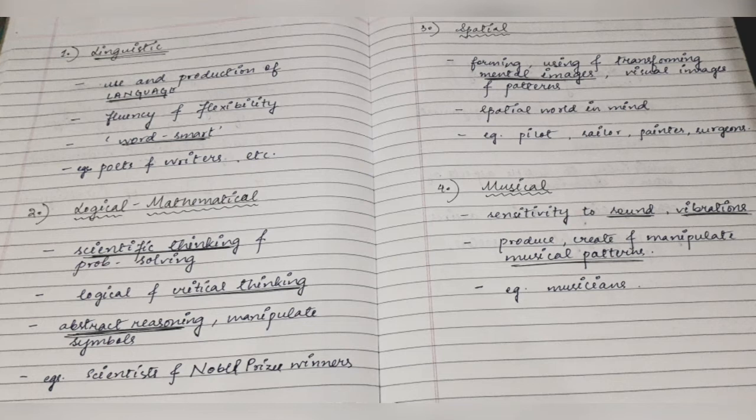Spatial intelligence is highly seen in pilots, sailors, painters, and surgeons. Pilots use their mental images to understand how to fly planes; sailors navigate through seas and oceans using spatial reasoning; and painters bring whatever mental image they have in their mind into their paintings. This is possible because their spatial intelligence is quite high, allowing them to form, use, and transform mental images.